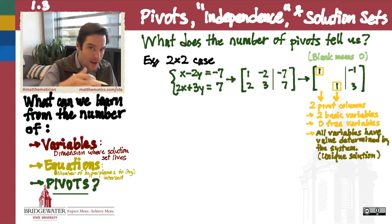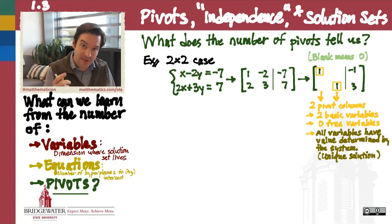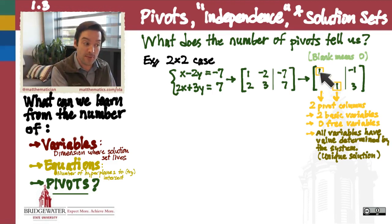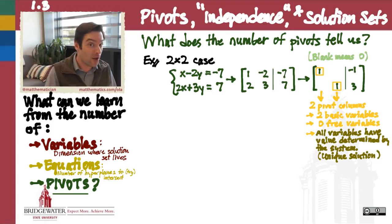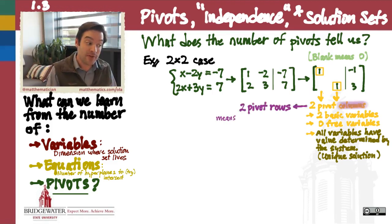But that is a column viewpoint — that's considering what the pivots tell us about the variables, because it's the columns that correspond to the variables. One of the really important facts about linear algebra is that every column that has a pivot also corresponds to a row that has a pivot, because of how we define pivots. They have all zeros underneath them, but also all zeros to the left of them. So every pivot is not only the only pivot in its column, it's also the only pivot in its row.